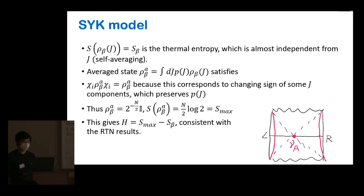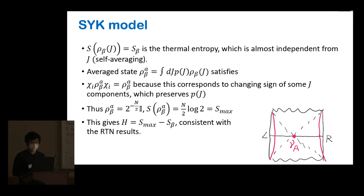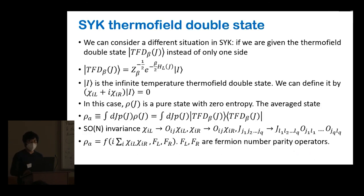The average state in the thermal SYK case is easy to calculate because of symmetry: averaging over all possible random Js — which are independent Gaussian variables — has a very symmetric measure. You can prove that rho_beta of A has to commute with all the fermion operators and therefore has to be identity. When you conjugate the rho with a chi, you're just changing the sign of some Js, changing sign of all the terms that involve chi, which doesn't change P_J. So rho_beta has to be identity and therefore the entropy is maximum, consistent with the gravitational conjecture.